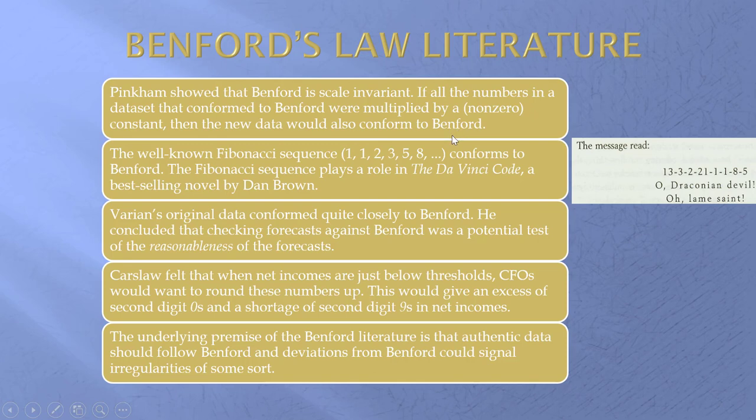This is a little extract from The Da Vinci Code. This is the Fibonacci sequence and that sequence follows Benford's Law perfectly, and we have quite a few more than I'm even showing you here. The underlying premise of the literature is that authentic data should follow Benford's Law and deviations could signal some type of irregularity. So we're not saying definitely fraud, but it could be error or a bias or something else, maybe something innocent or maybe something not so innocent.